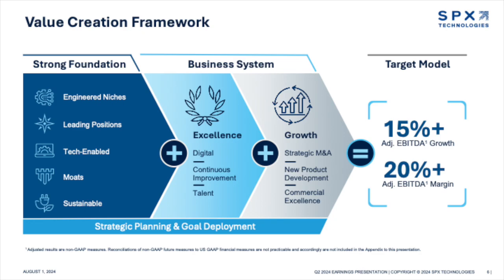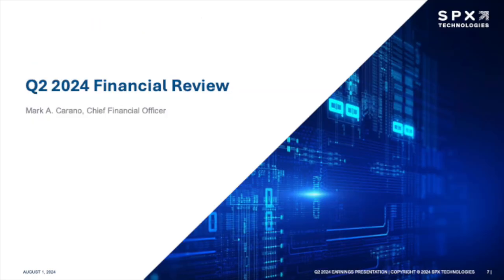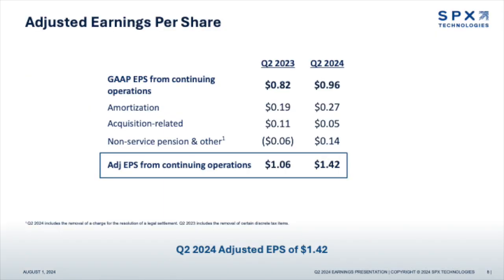Our next question comes from the line of Damien Karas of UBS. I wanted to ask a follow-up on your margins, because the performance has been impressive. You're raising guidance several straight quarters, and that's after 300 basis points or so of expansion last year. Could you hone in a little on the execution and where it's been better than expected — any of those initiatives really driving the outsized margin performance, and how much runway do you think you have left?